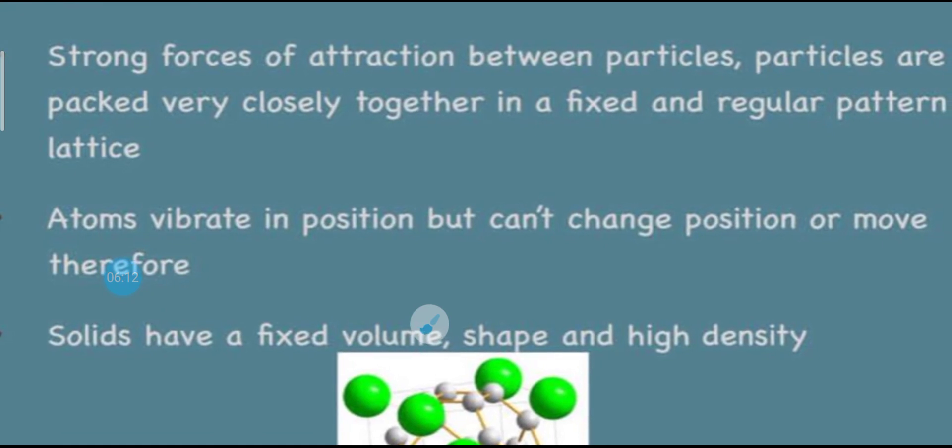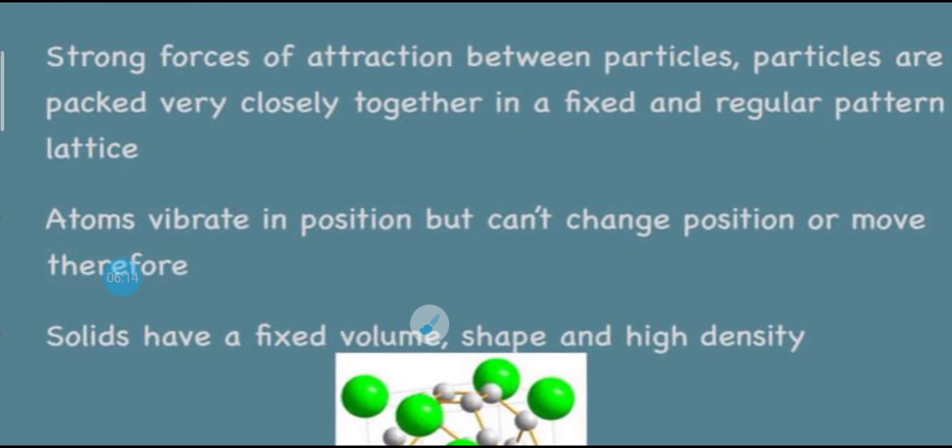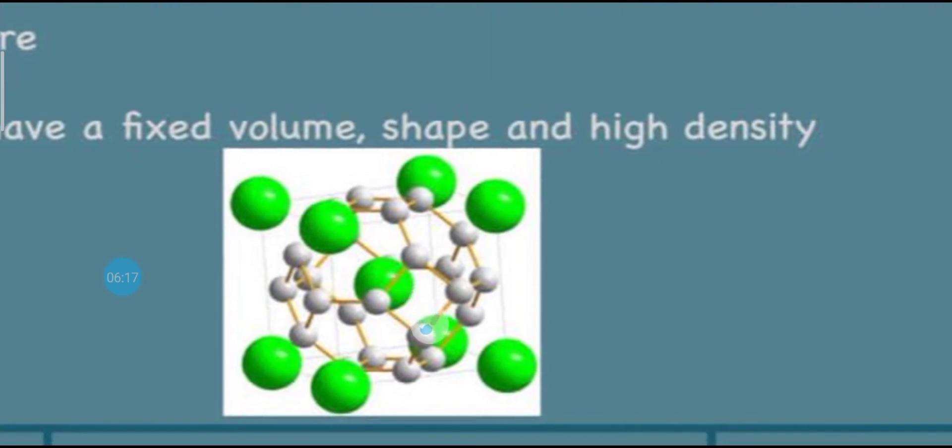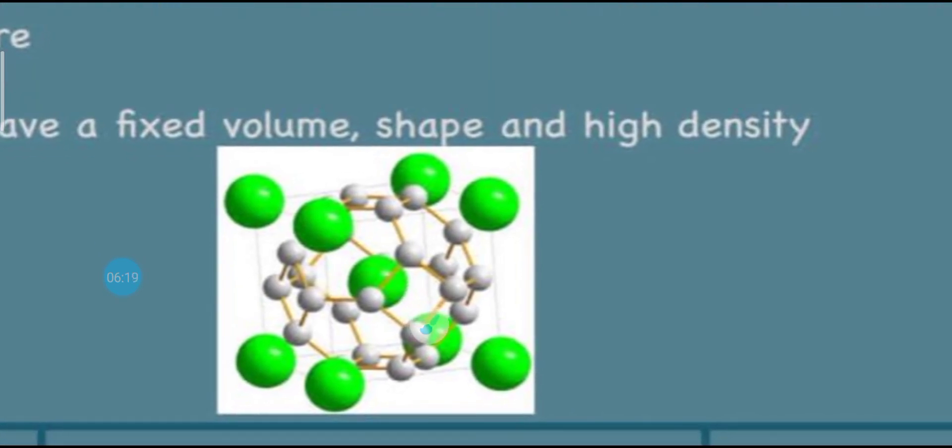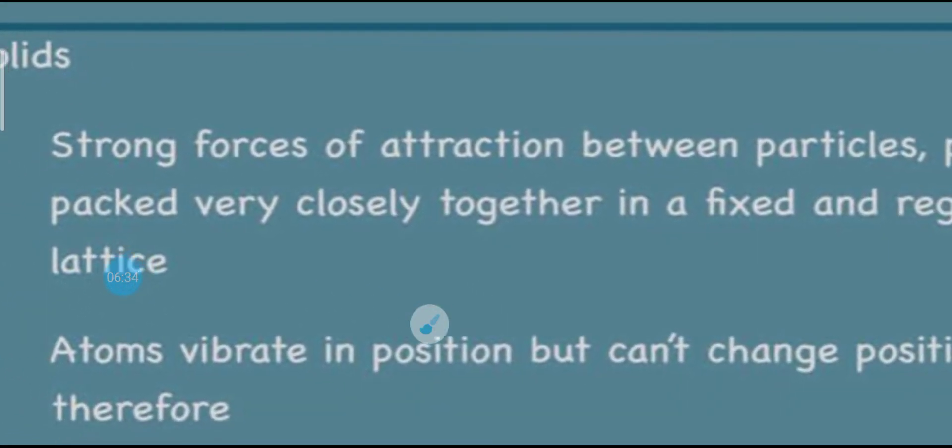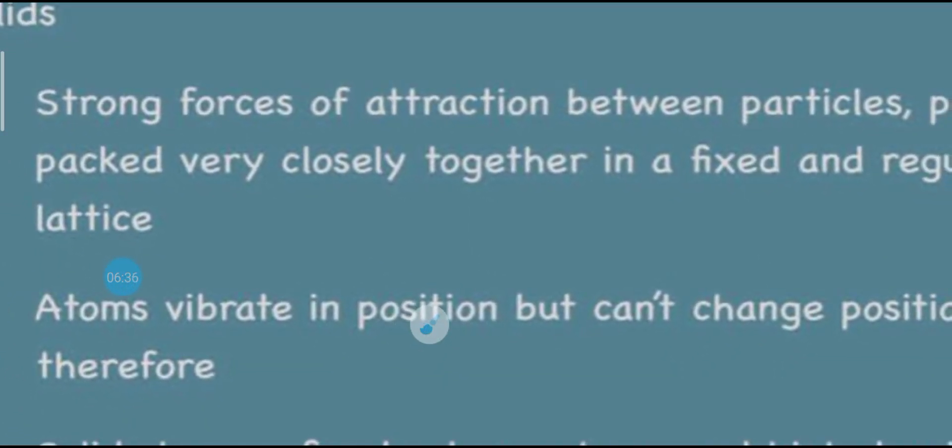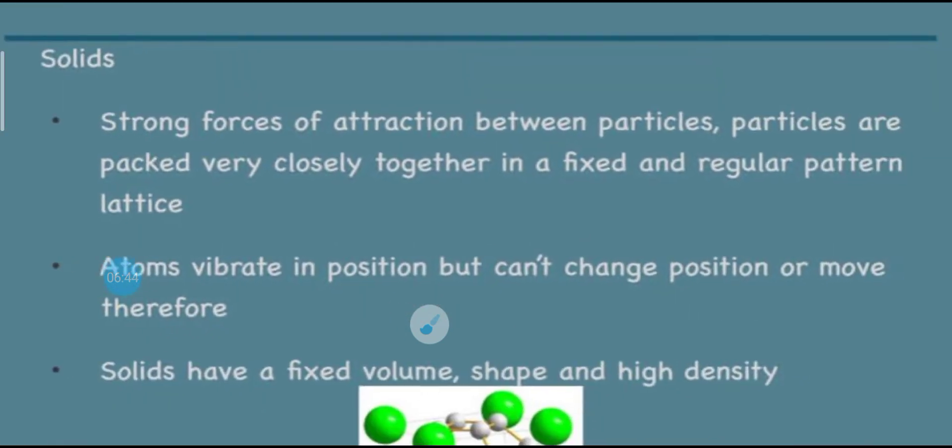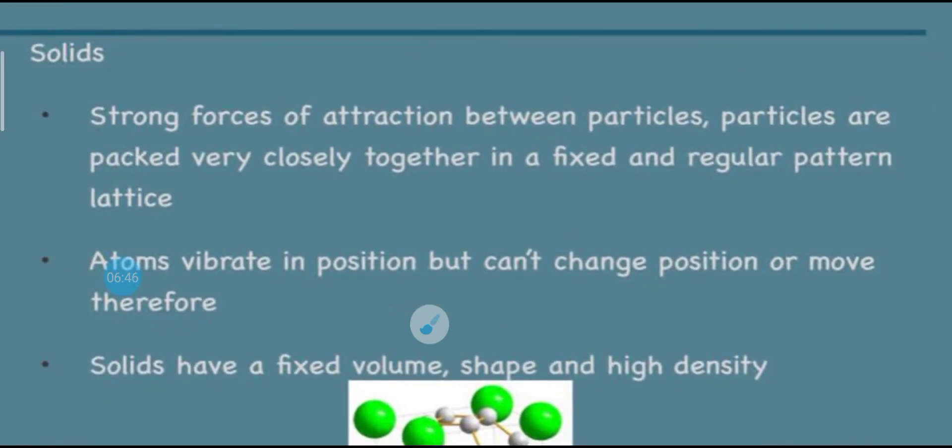The atoms vibrate and the forces between the particles are very strong. The particles are closely together with no freedom of movement. That's why solids always have the same shape. They are called solids because they have the same shape, same volume and same density. This is because they have the highest force of attraction and are closely together. They vibrate but cannot change position, therefore they have fixed shape, position and density.